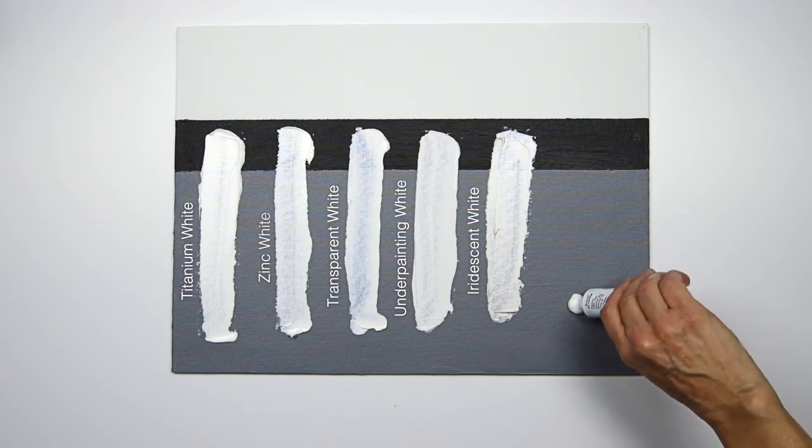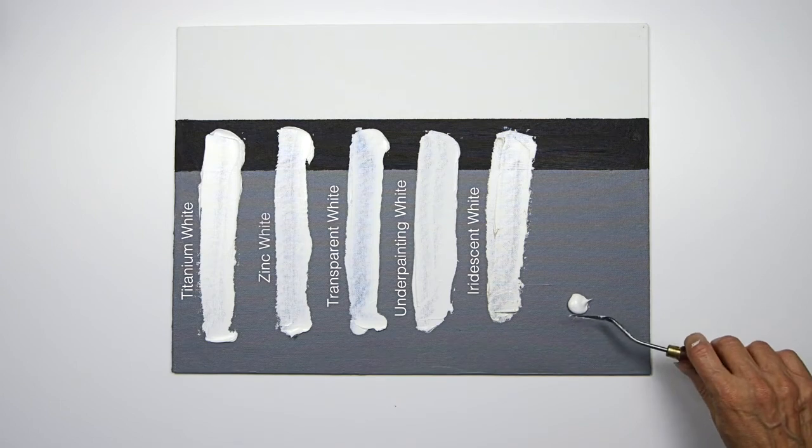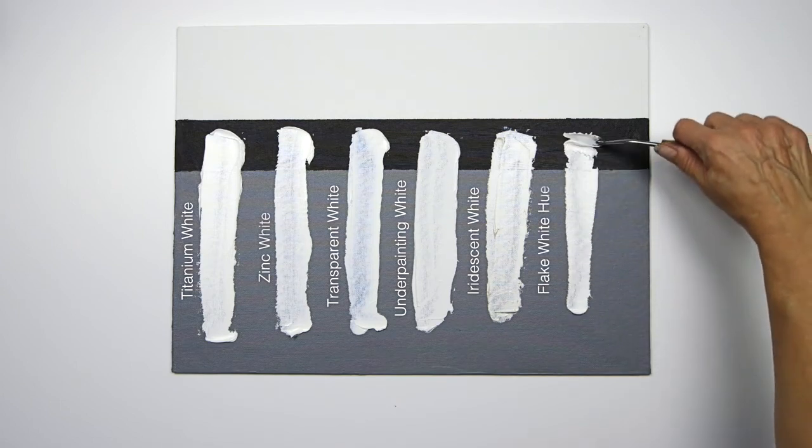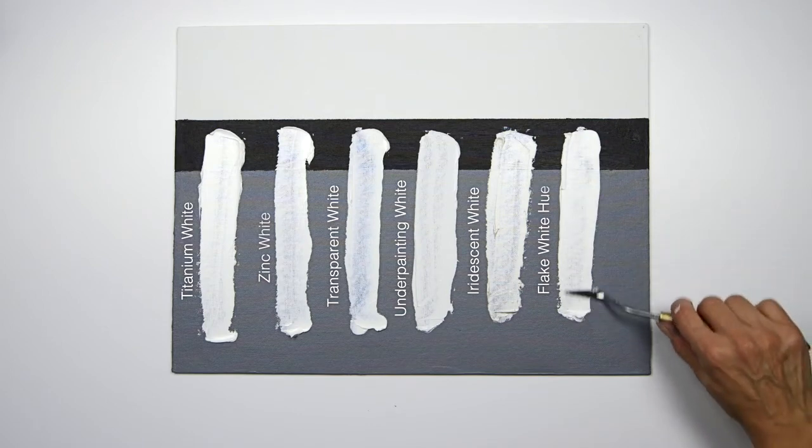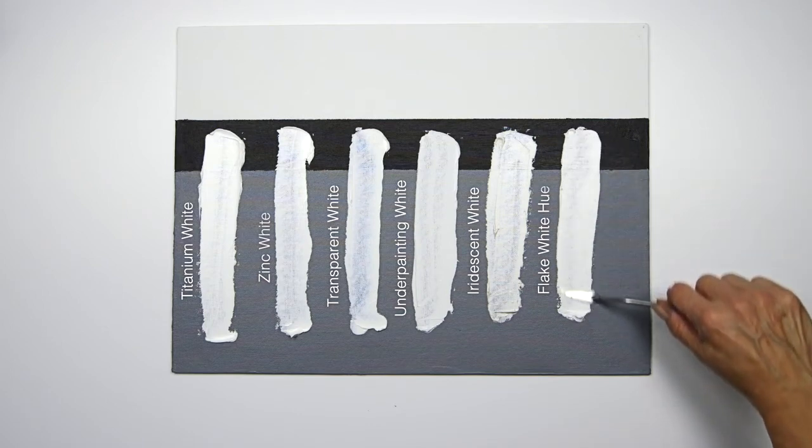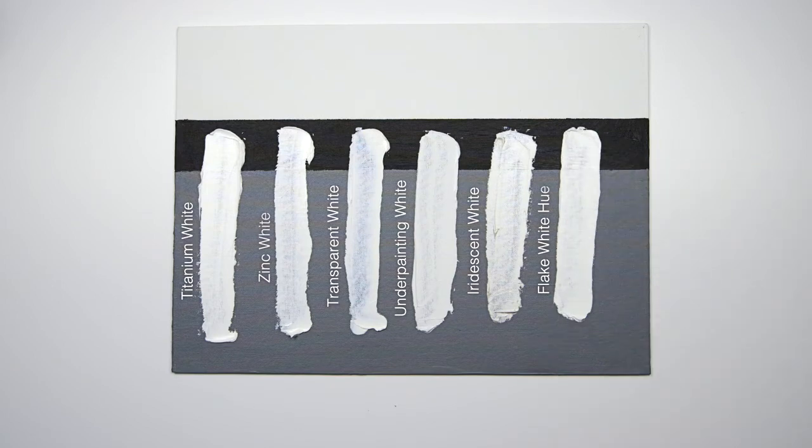And then finally we've got flake white which is the hue so it's not as toxic as the original and it's got a really lovely warmth to it but without having any color added to it so that wouldn't affect your palette in a way that you wouldn't want and hopefully this will inform your palette.